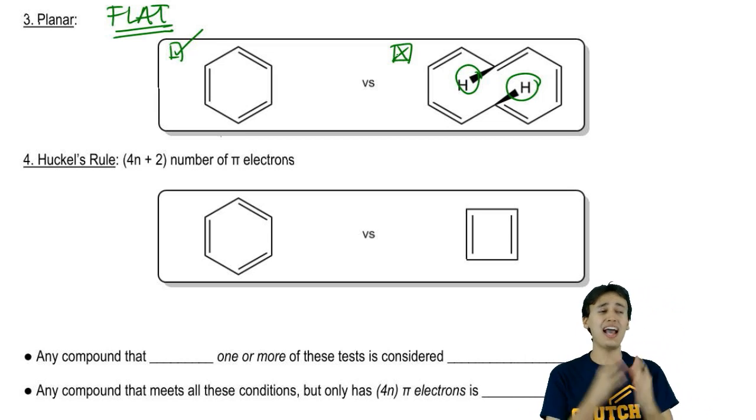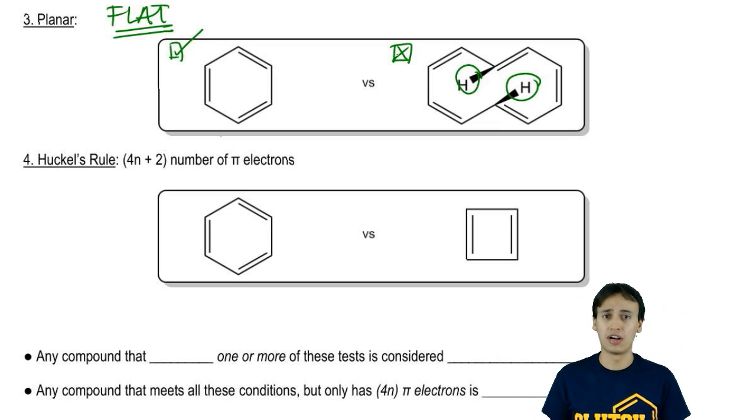Now you might be wondering, how do I know that a ring is planar or not? Actually, there are ways to know that we'll go into later, but for right now, we're going to assume that a ring is planar unless we're given reason to believe it's not. For example, this one was drawn in a peculiar way so I would think those hydrogens are going to interact with each other and make it not planar.